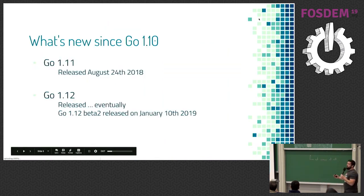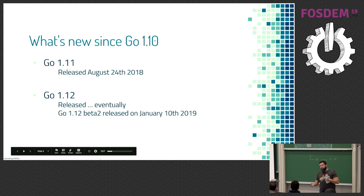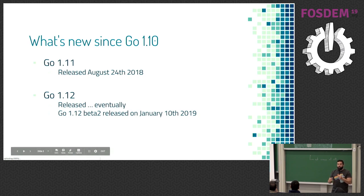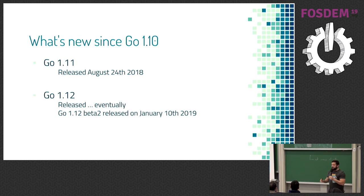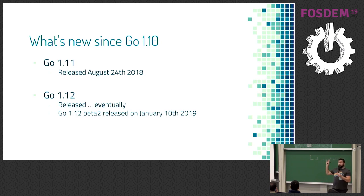We're going to be talking about everything that happened since last time — Go 1.11 and Go 1.12. Go 1.11 was released on August 24th, 2018, and Go 1.12 is coming soon. A beta 2 was released on January 10th. Note that if you run code on the playground, it won't work because the playground is still running Go 1.11.